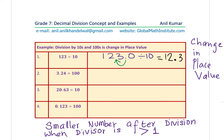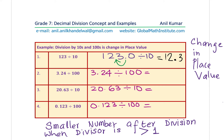You can pause the video and answer the rest of the questions. For 3.24 divided by 100 — two zeros means two places. We push the decimal two places to the left; since there isn't another digit, we introduce a zero and get 0.0324. Sometimes we may have to introduce zeros on the left side.